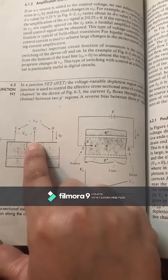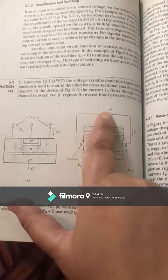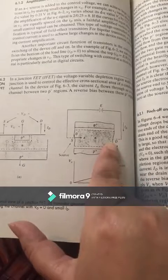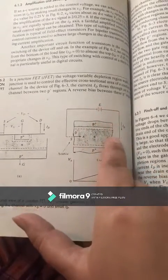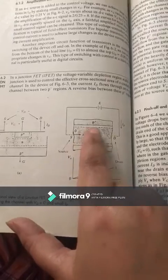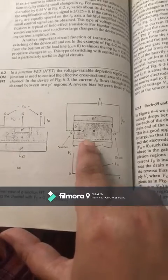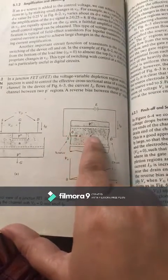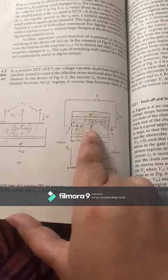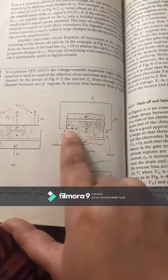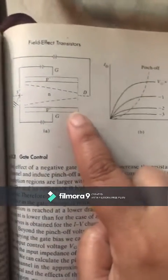This shows the general FET configuration with source, drain, and gate. Drain and source are connected with a battery in a reverse bias circuit. Two gates are internally connected. This is a PNP transistor with an n-type conducting channel, so electrons move from the source.